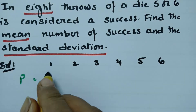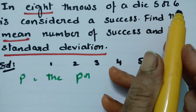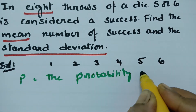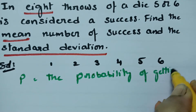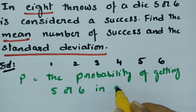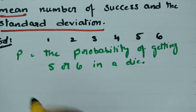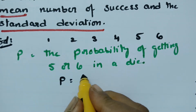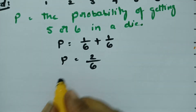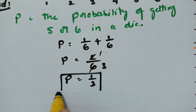In the solution, P means the probability of success. Here, success is getting 5 or 6 on the die. Getting 5 on the die is 1 by 6 and getting 6 on the die is 1 by 6. Therefore P is equal to 2 by 6, which simplifies to 1 by 3.